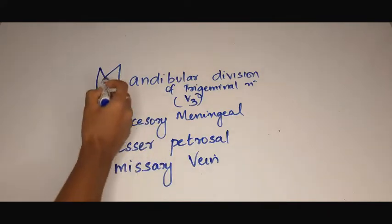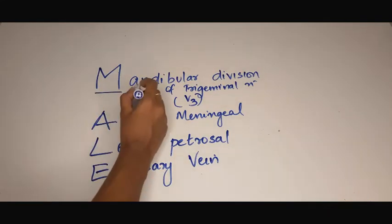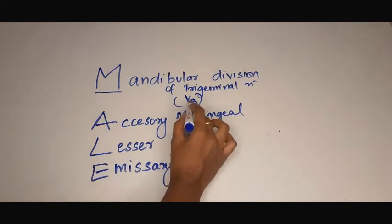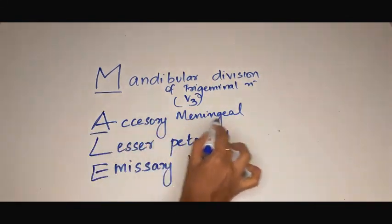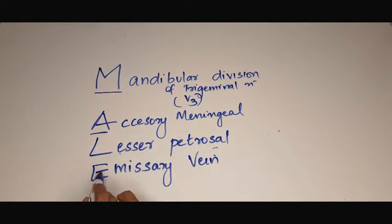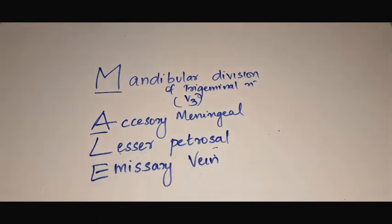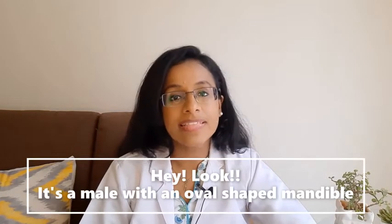We need to know what this male stands for. M: mandibular division of trigeminal nerve, 5-3. A: accessory meningeal. L: lesser petrosal. E: emissary vein. So the mnemonic for foramen ovale is: Hey look, it's a male with an oval shaped mandible.